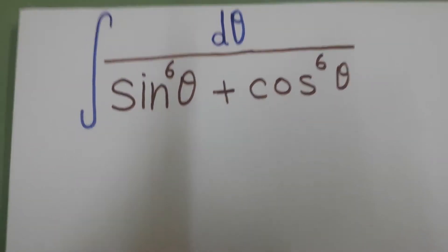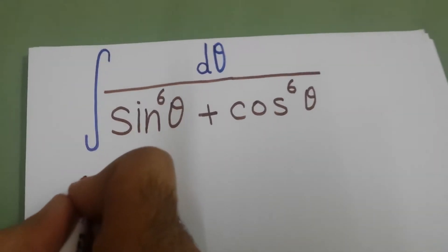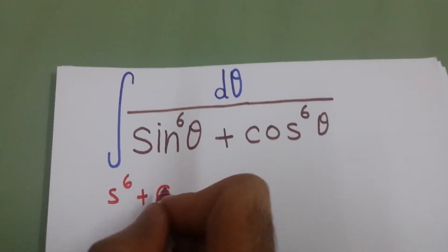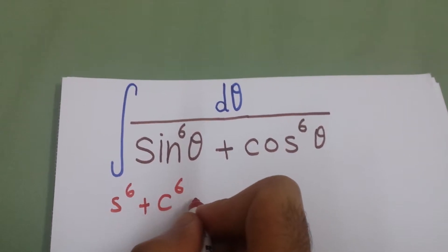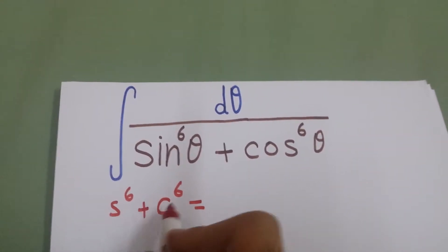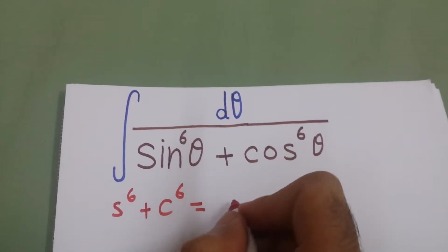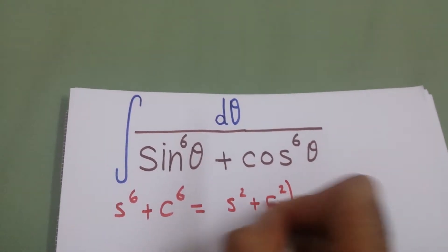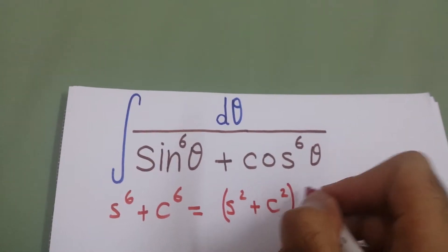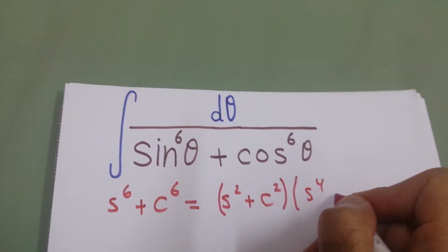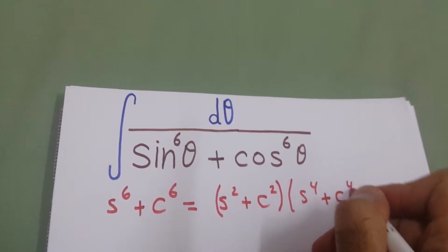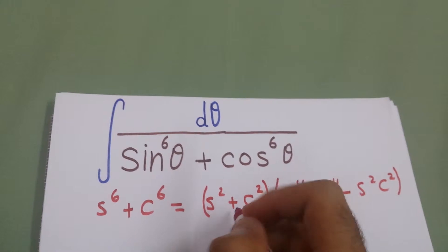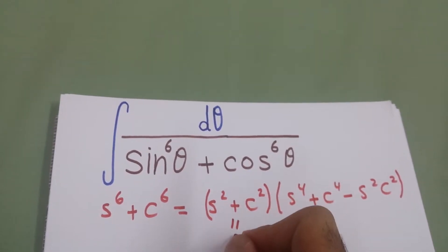We will simplify the denominator. We have sin⁶(2θ) + cos⁶(2θ). We can factor it as a sum of two cubes, so it will be (sin²θ + cos²θ) times (sin⁴(2θ) + cos⁴(2θ) − sin²θ·cos⁴(2θ)). Since sin²θ + cos²θ = 1, the first bracket equals 1.